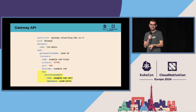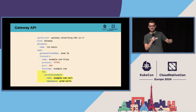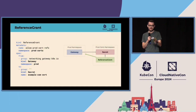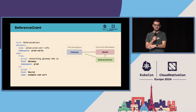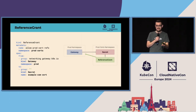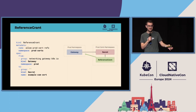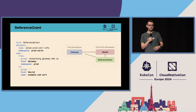On its own, that cross-namespace reference is not valid. You have to pair it with the other half of the handshake. If one half is the reference pointing out, you need something else to say, I trust that reference. So we introduced an API called Reference Grant. It says: I, as the owner of this secret, trust references from gateways in the prod-certs namespace. This is working fairly well — it exists in Gateway API today and is also used by SIG storage. As we've seen more usage, it became clear we should try to make this a more formal, broader concept and bring it into tree.